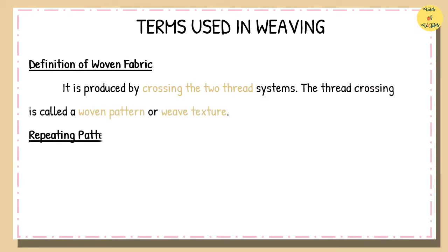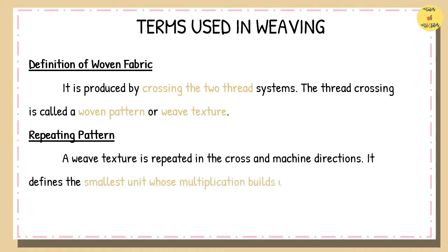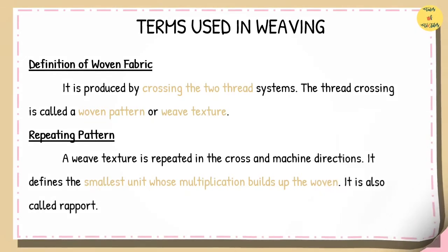Repeating Pattern. A weave texture is repeated in the cross and machine directions. The repeating pattern defines the smallest unit whose multiplication builds up the woven. It is also called rapport.